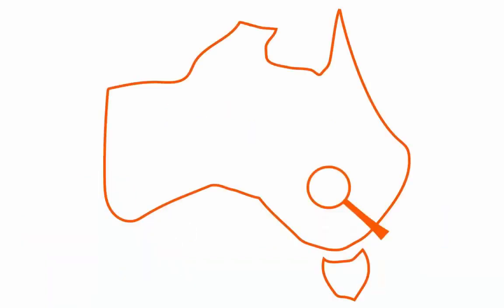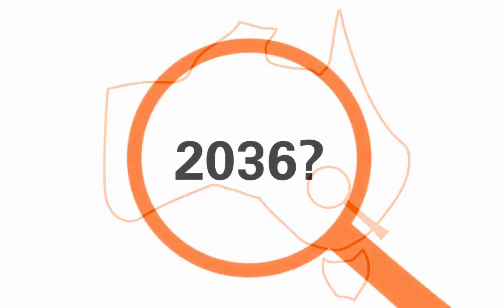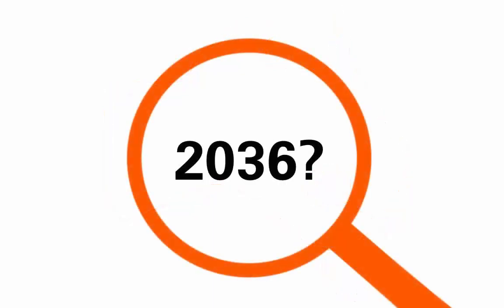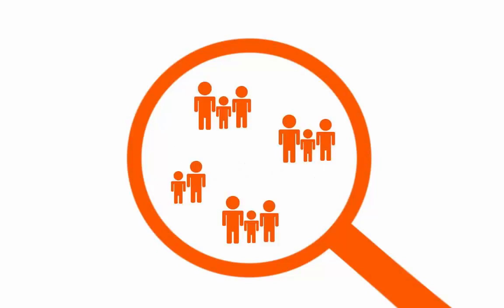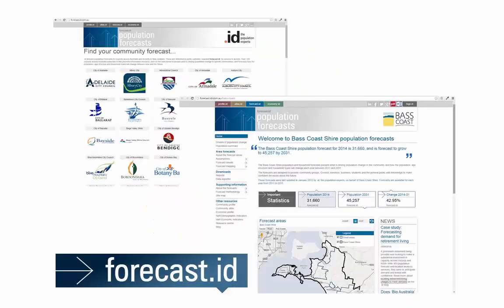Have you ever wondered what your local government area will look like in 2036 or any year for the next 25? How many people will there be and how will they live? Forecast ID has the answers. Forecast ID is an online population and household forecast for a local government area.